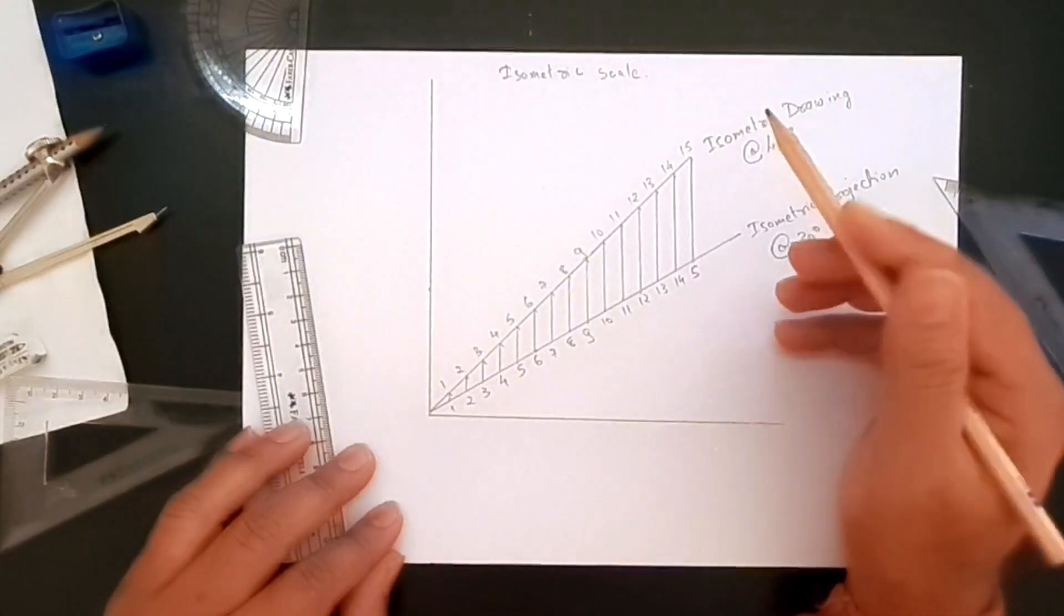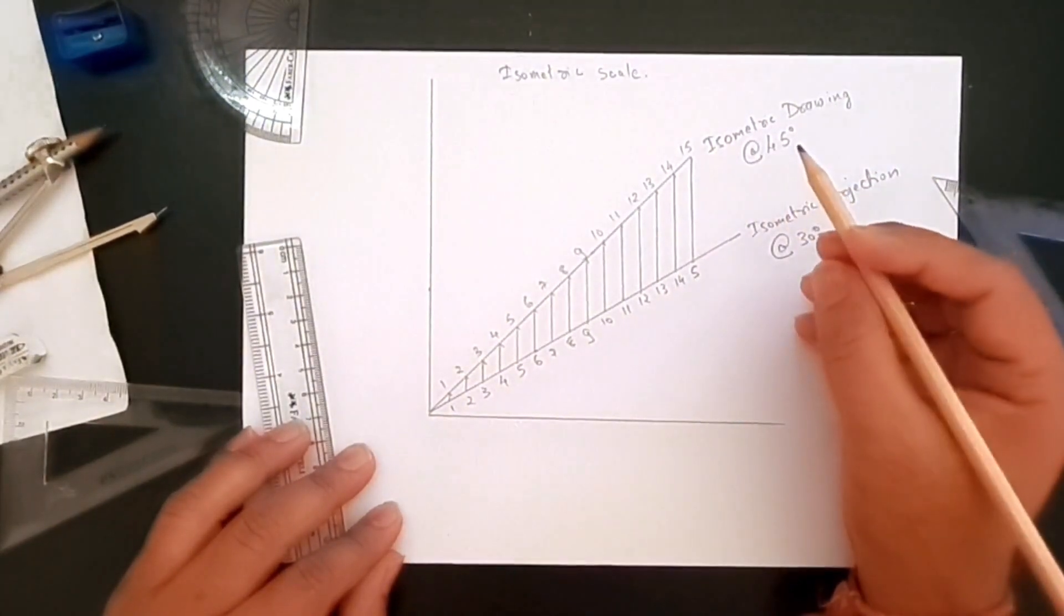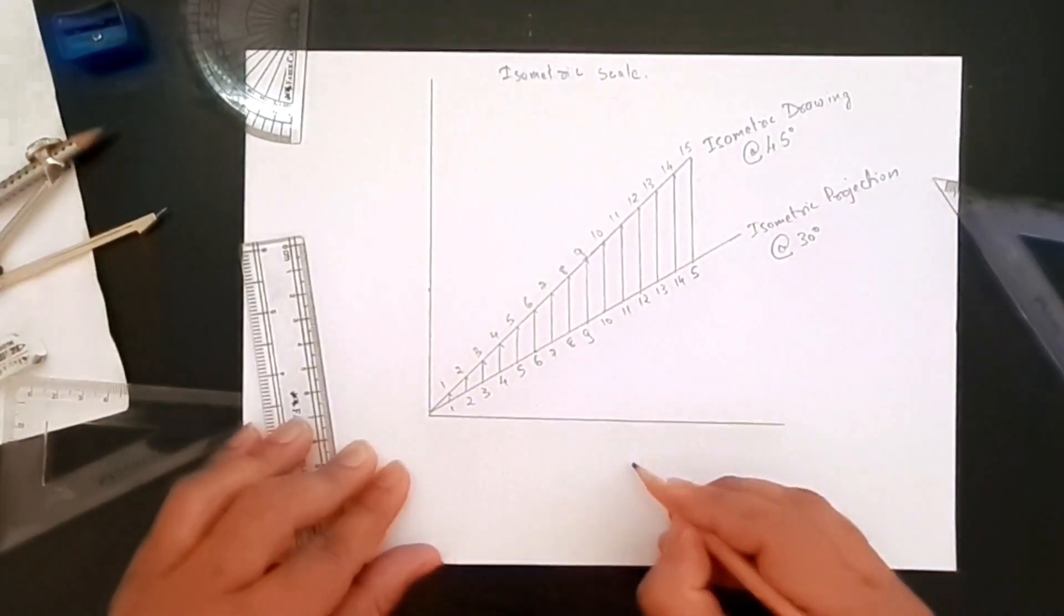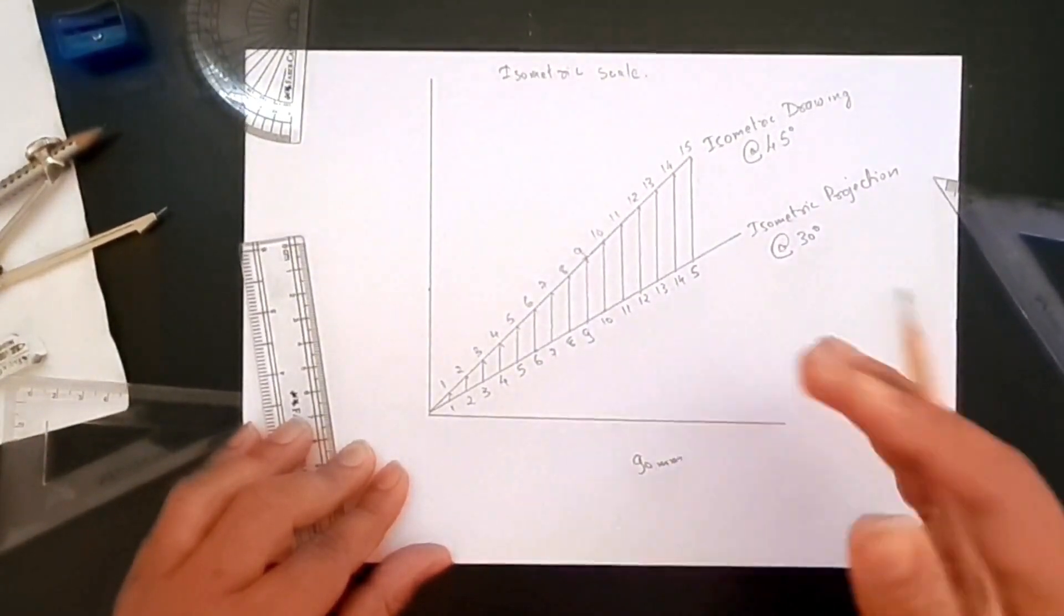If someone gave you and I to create an isometric projection where the dimensions were say 90 millimeters.